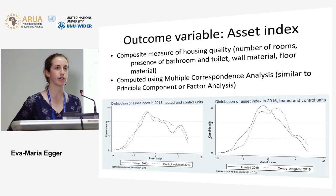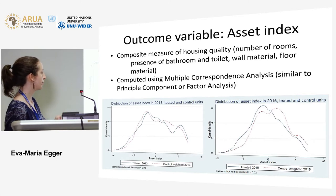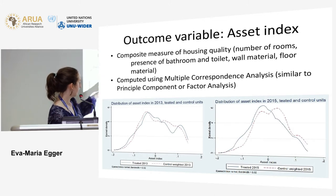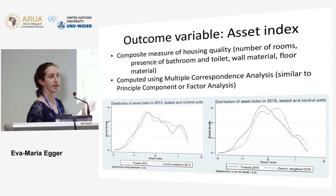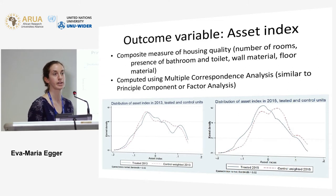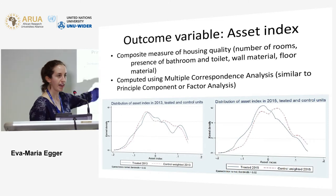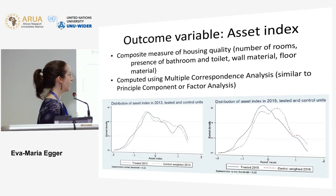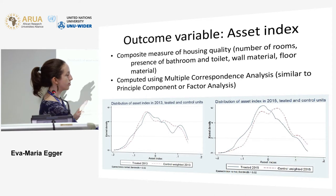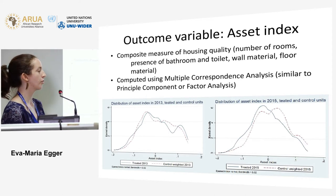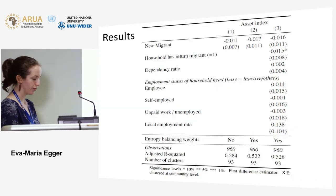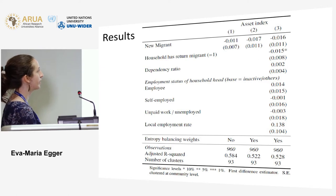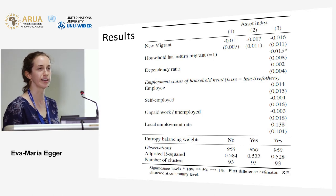For the dependent variables, we use this asset index. At baseline, the treated households — those with a new migrant, shown in blue — and the comparison group have a fairly similar distribution of the asset index, which also results from the constructed weights making these households look observationally similar. Their wealth status is pretty much the same at baseline. Two years later, we can see they have shifted apart to some extent — the control households have a slightly higher asset index than the new-migrant households.